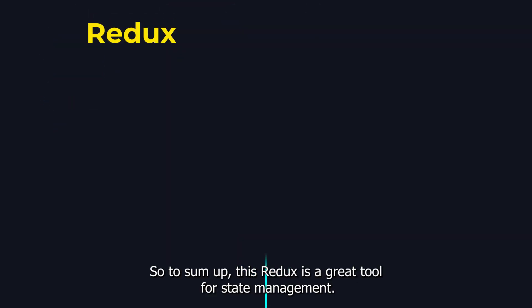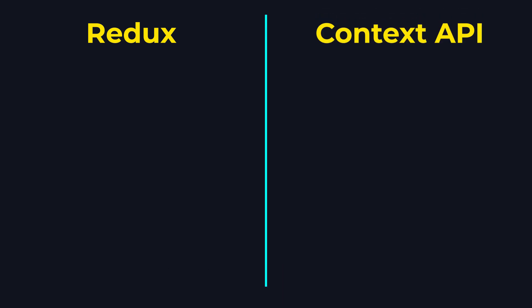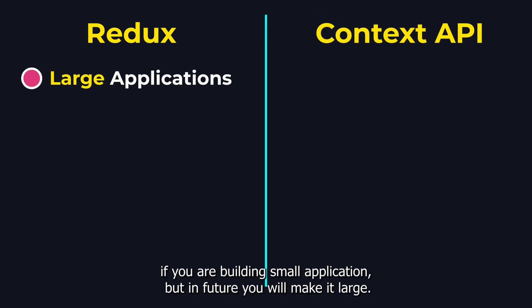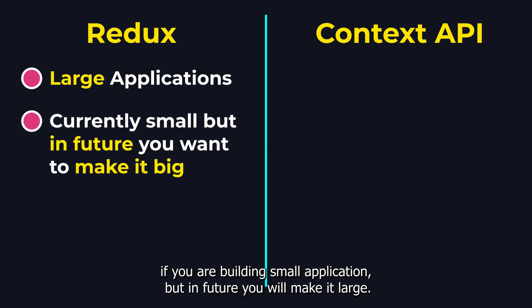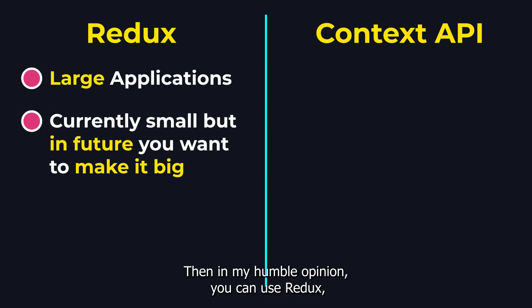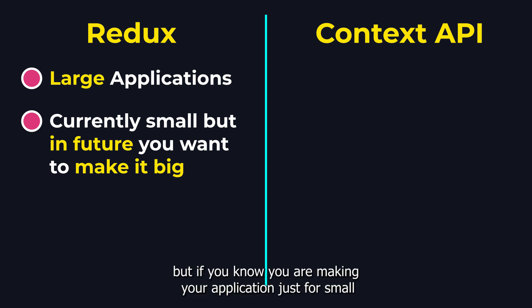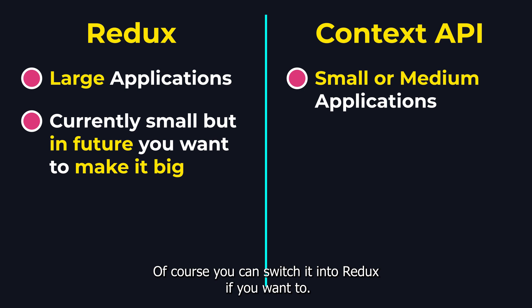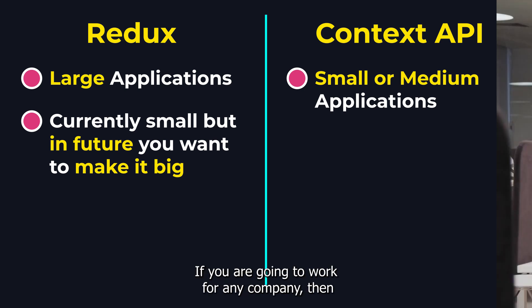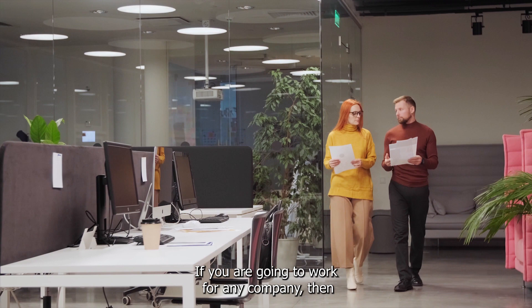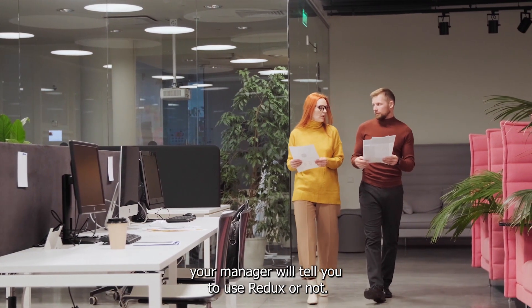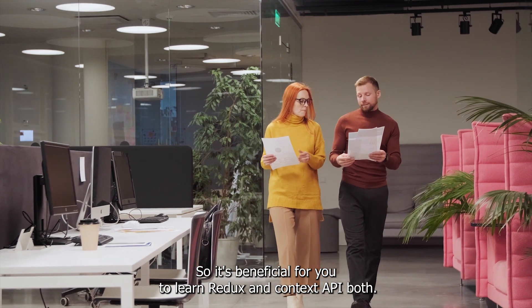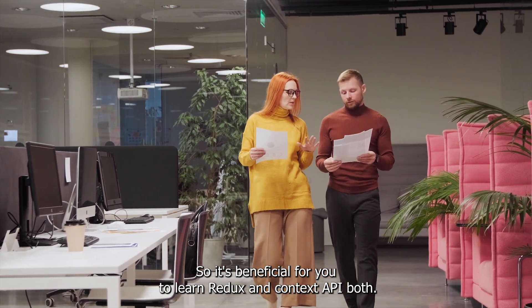To sum up: Redux is a great tool for state management if you are building a large scale application, or if you are building a small application but plan to make it large in the future — then in my humble opinion, you can use Redux. But if you know you are making your application just for small or medium scale, then Context API is good for you. Of course you can switch to Redux if you want. If you're going to work for any company, your manager will tell you whether to use Redux or not, so it's beneficial for you to learn both Redux and Context API.